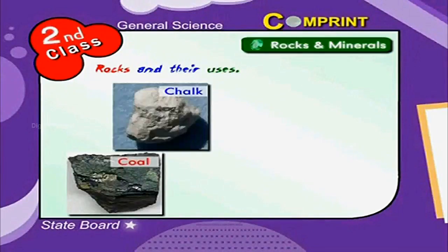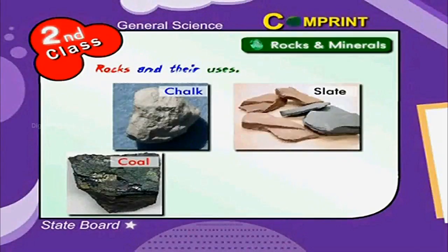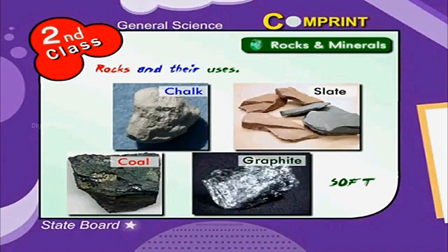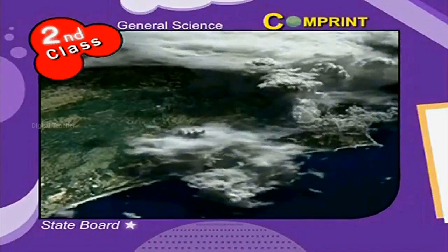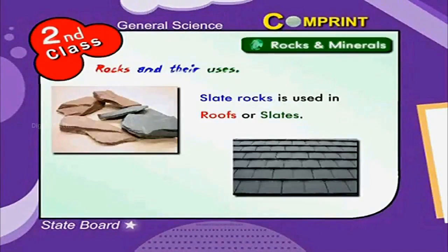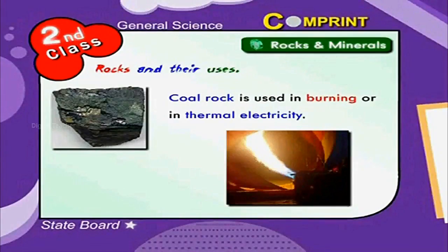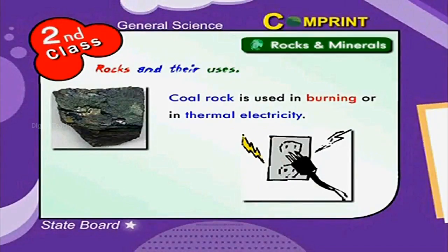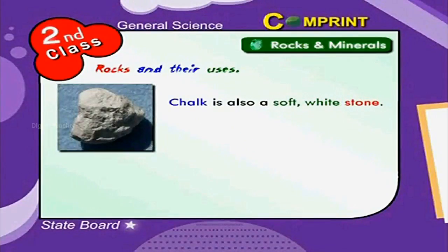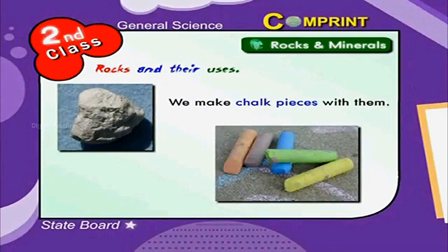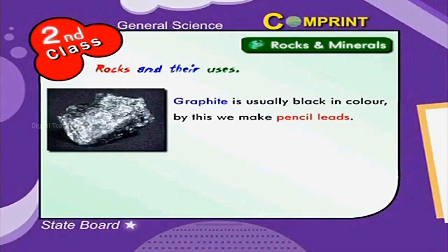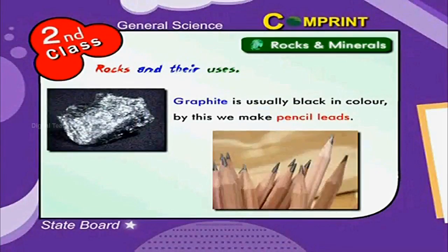Coal, chalk, slate, and graphite are soft rocks. These are found in layers of the earth. Slate rock is used in roofs or making slates. Coal rock is used in burning or in thermal electricity. Chalk is also a soft white stone; we make chalk pieces with it. Graphite is usually black in color; by this, we make pencil leads.